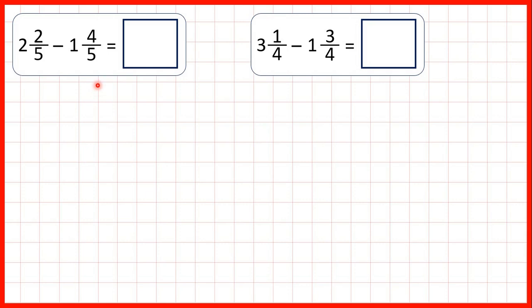Now here we're subtracting a mixed number. For this first question we have 2 and 2 fifths minus 1 and 4 fifths.